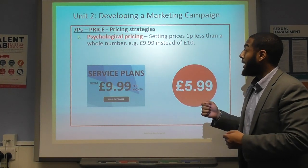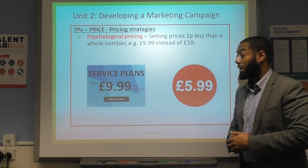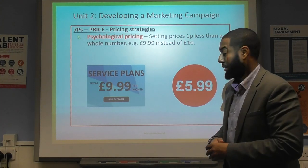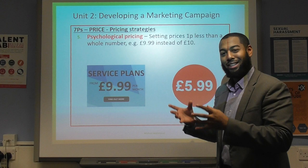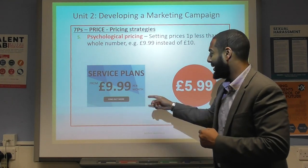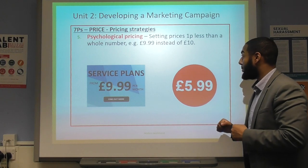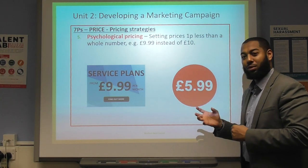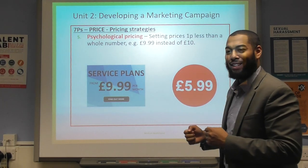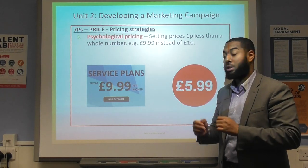Psychological pricing is setting prices one penny less than a whole number — for example, £9.99 instead of £10. Here we have an example of a service plan for £9.99 per month instead of £10. Ten pounds seems chunky and may not persuade the customer, but £9.99 seems more affordable. Similarly, £5.99 instead of £6 — it's a psychological thing; people mentally deem it cheaper than it actually is.